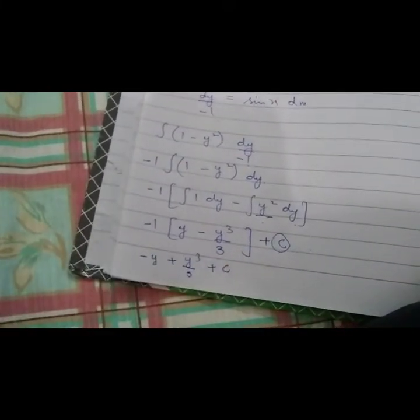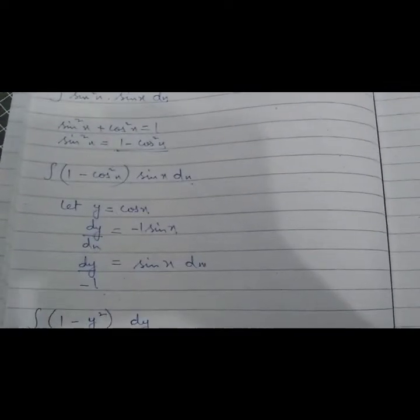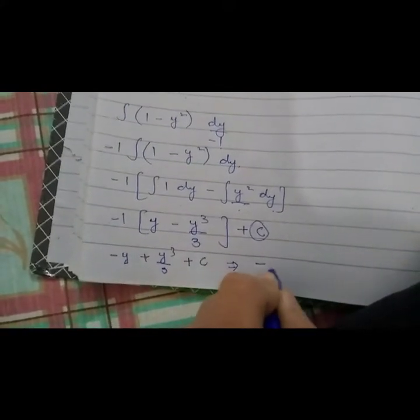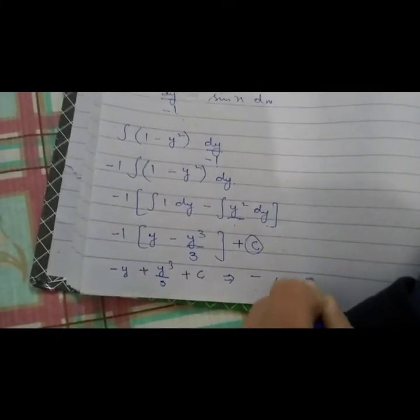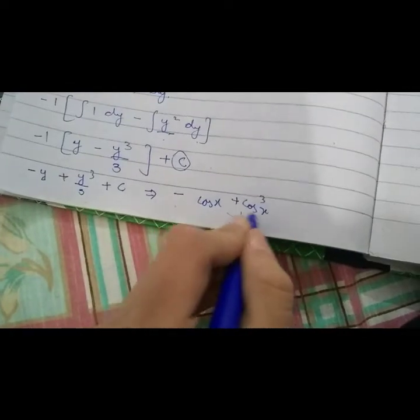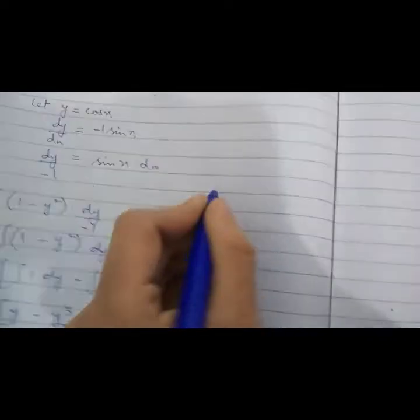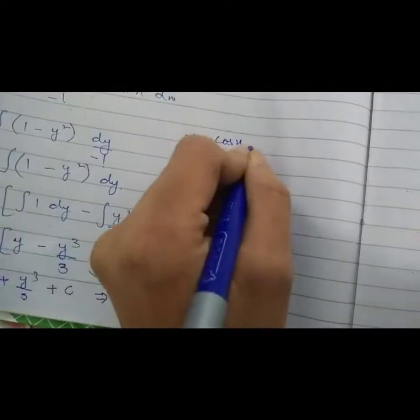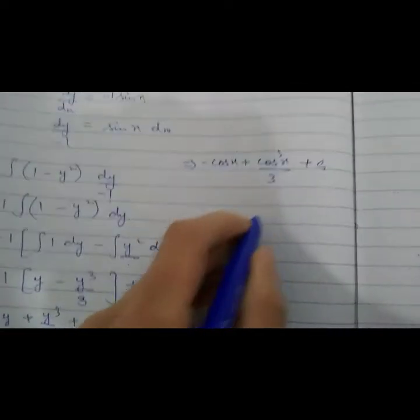Now we have to put back the values of y. What is the value of y? The value of y is cosine x, so it will be minus cosine x plus cosine cubed x upon 3, plus c. So this will be the answer.